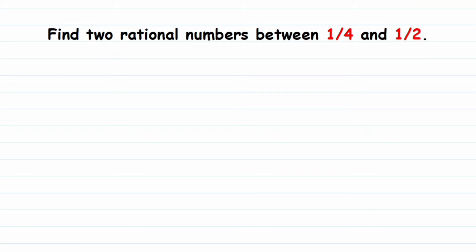We have 1/4 as the first rational number and 1/2 as the second rational number. The very first step is to check if the denominators are the same or not. The first number has denominator 4 and the second has denominator 2 — they are not the same, so we have to make them the same.